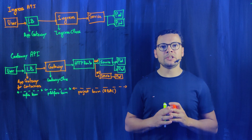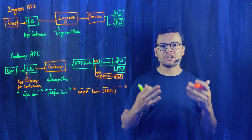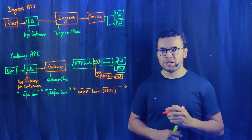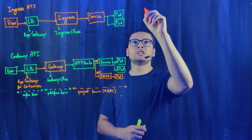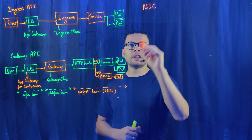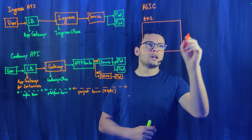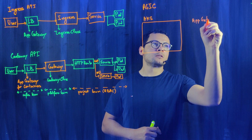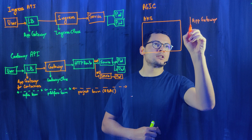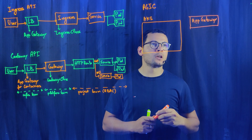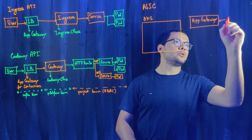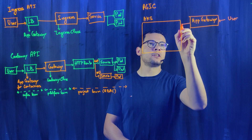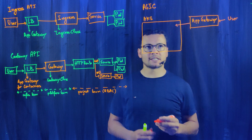Now I'll explain the difference between the old Application Gateway with AGIC — the Application Gateway Ingress Controller — and the new Application Gateway for Containers that supports the new Gateway API. With AGIC, which is the extension used for Application Gateway, we would have our AKS cluster and our App Gateway as an Azure resource. The App Gateway's role is to receive user traffic — the user connects to the Application Gateway IP — and then the App Gateway routes the traffic to the pods inside the cluster.